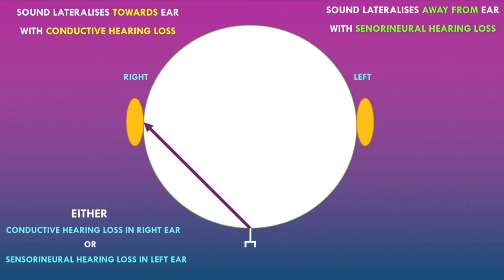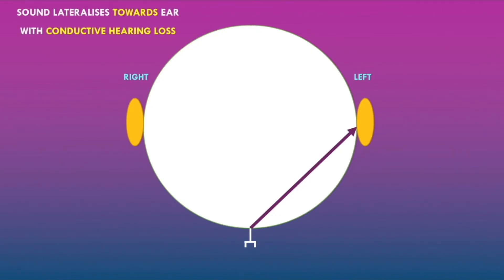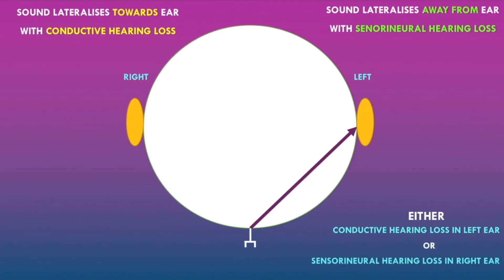Now consider another scenario where the sound lateralizes to the left ear. Applying the same principles, the Weber test tells us the patient either has conductive hearing loss in the left ear, because sound has lateralized towards the left ear, or sensorineural hearing loss in the right ear, because sound has lateralized away from the right ear.